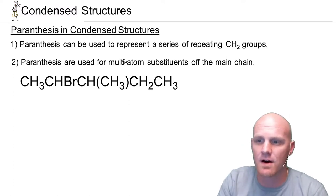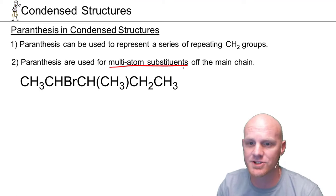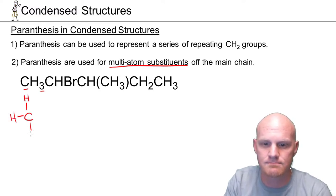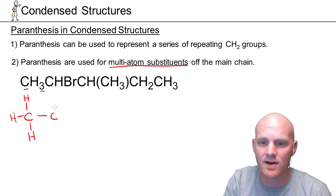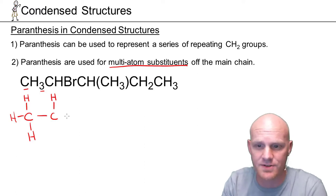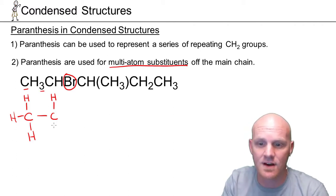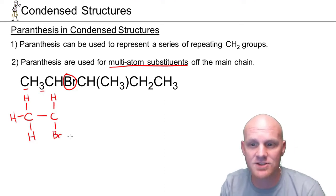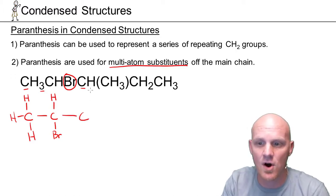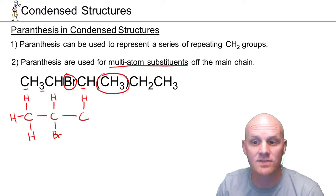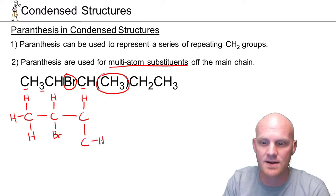The second place we use parentheses is for multi-atom substituents coming off the main carbon chain. The first carbon is bonded to three hydrogens, then bonded to the next carbon in the chain. That carbon is only bonded to one hydrogen, and it's also bonded to a bromine. Halogens, just like hydrogen, typically only make one bond — they're only one electron short of a filled octet. For a single atom coming off the main chain, it does not need to go in parentheses.